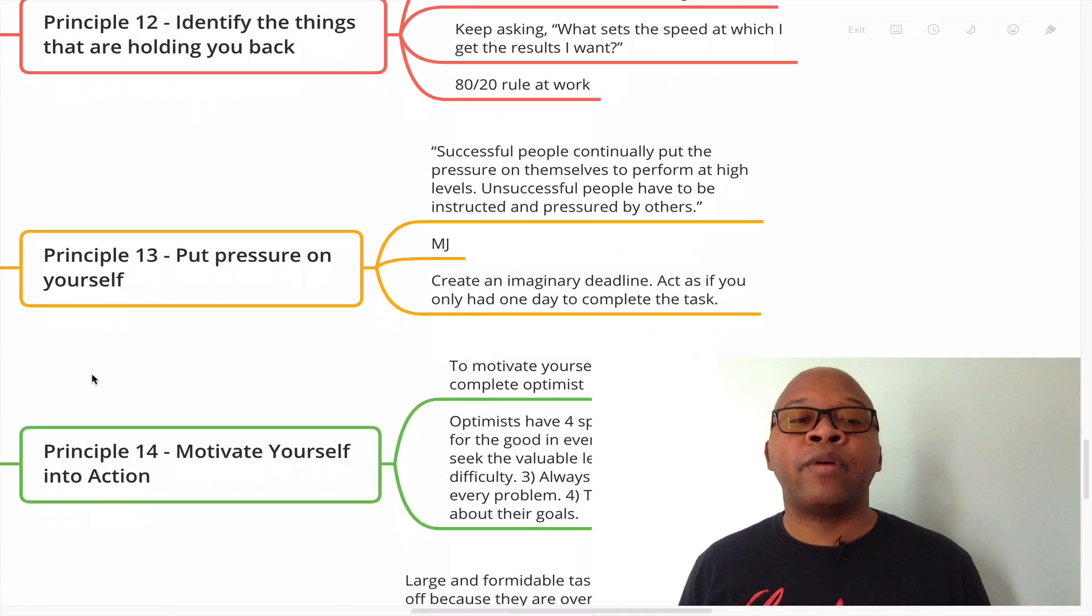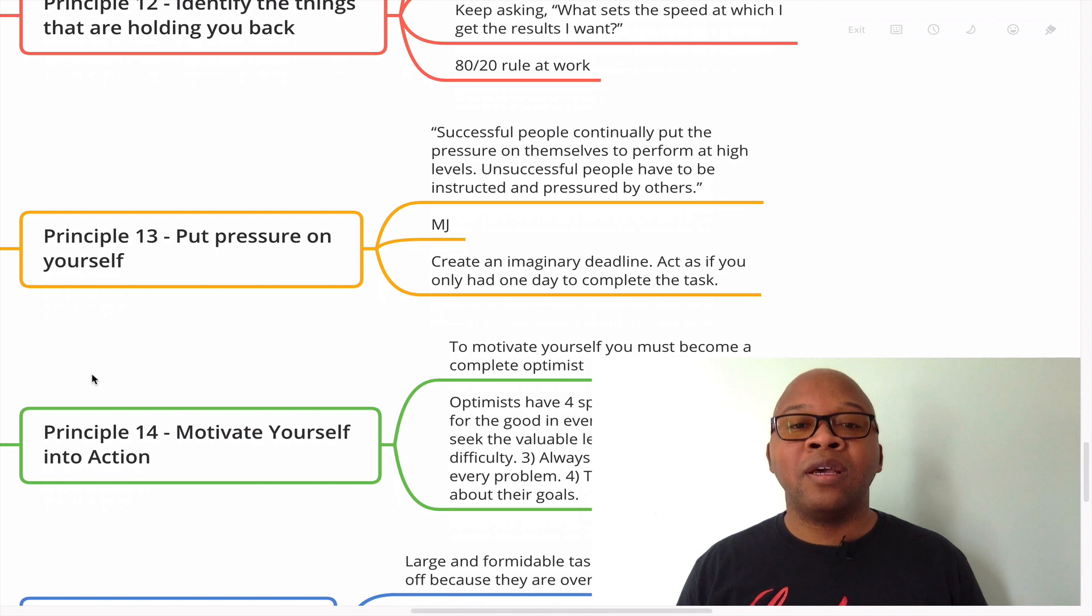And then principle 13, put pressure on yourself. Successful people continually put the pressure on themselves to perform at high levels. Unsuccessful people have to be instructed and pressured by others. So successful people put pressure on themselves. Jordan, Michael Jordan, arguably one of the greatest basketball players of all time, put pressure on himself, continually put pressure on himself to perform, to get better. And eventually he became one of the greatest to ever play the game.